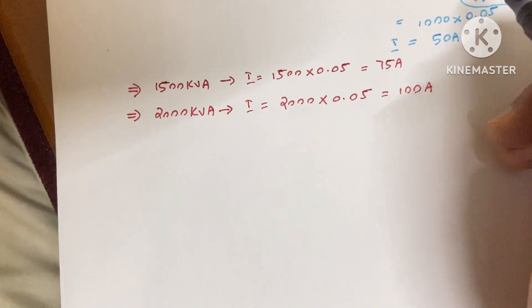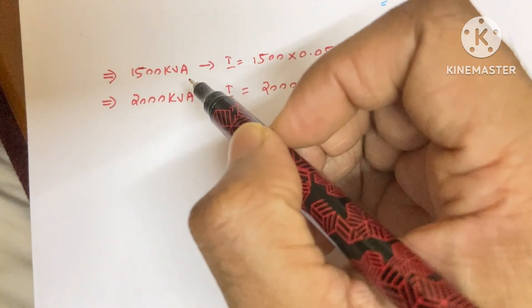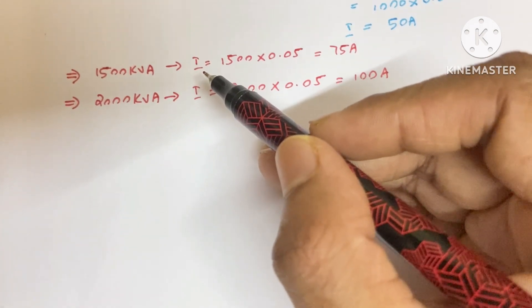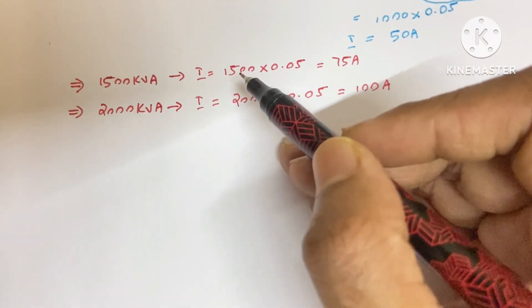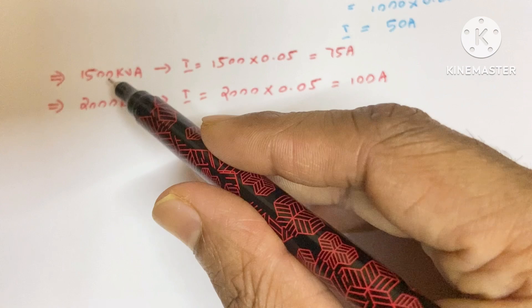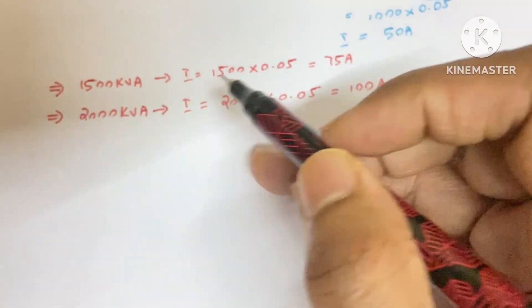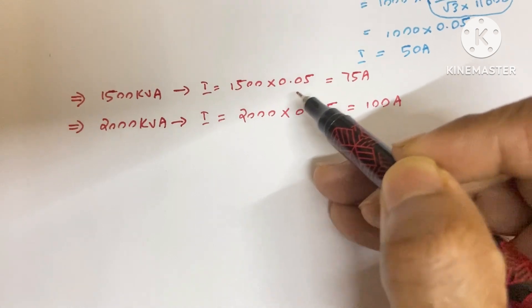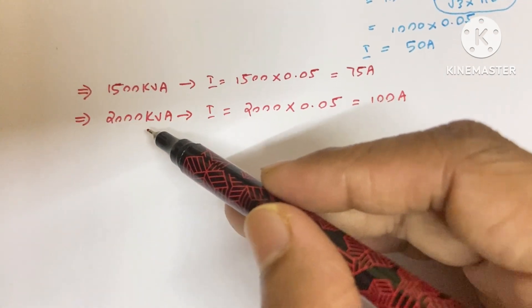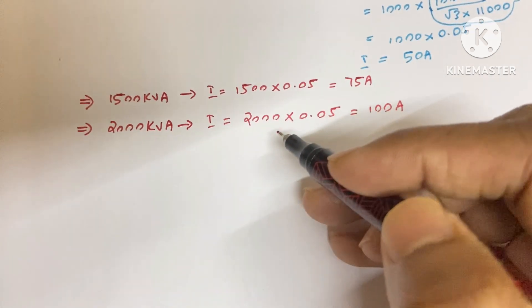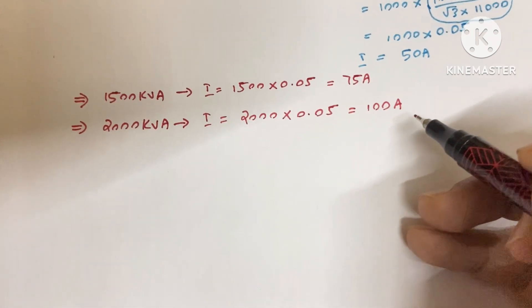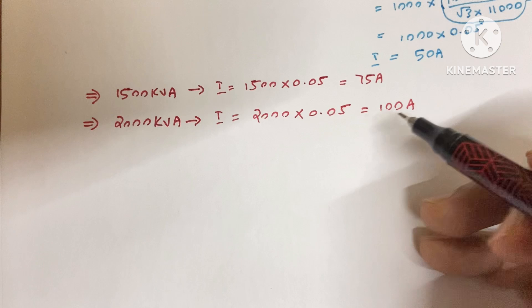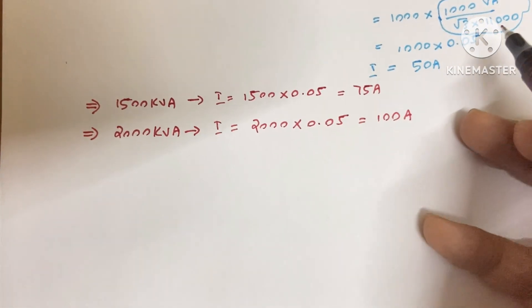Suppose your transformer is 1500 kVA, then the current on the primary side of this transformer would be 1500, that means this 1500 kVA rating multiplied by 0.05, this magic value. And if your transformer is 2000 kVA, then the current will be 100 ampere. It will be very useful to find the current of any transformer if your voltage is 11000 volt.